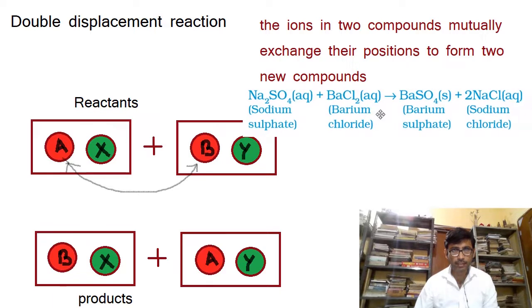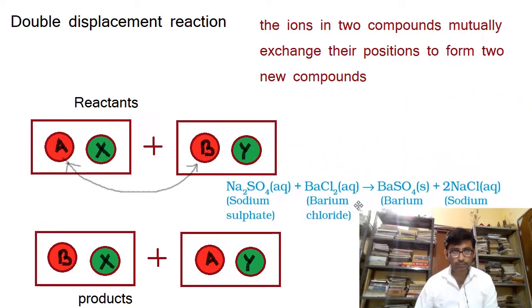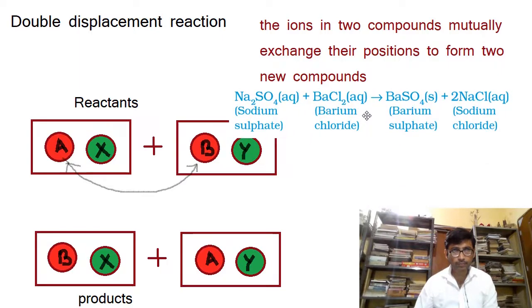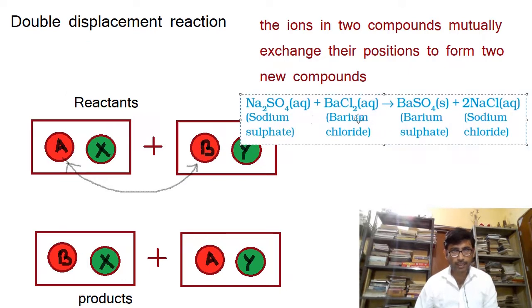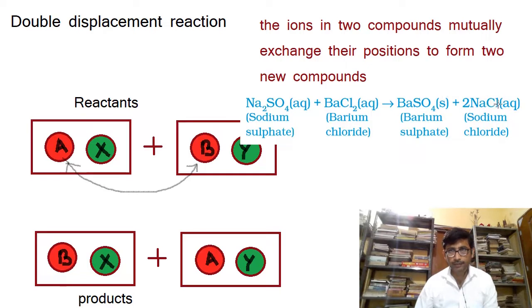The reaction is between sodium sulphate and barium chloride. After the reaction, sodium is now paired with the chloride ion, and barium, which was formerly with the chloride ion, is now with the sulphate ion — so they have exchanged their positions. This barium sulphate is a solid, so it does not dissolve in water and settles down as a precipitate.